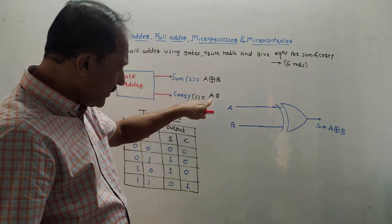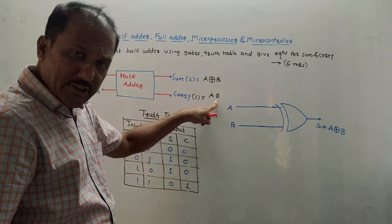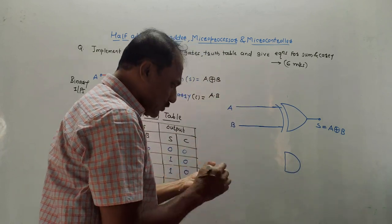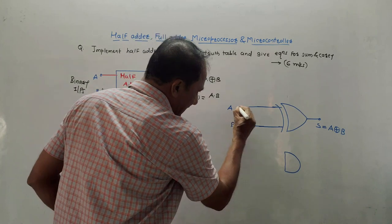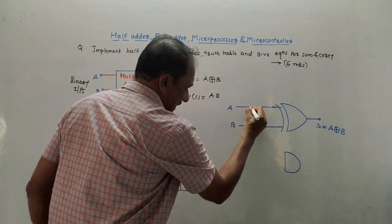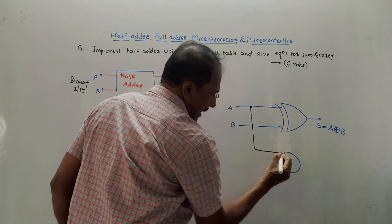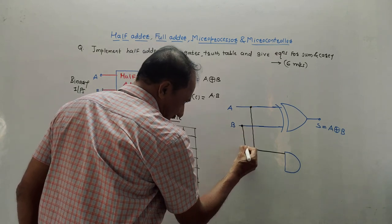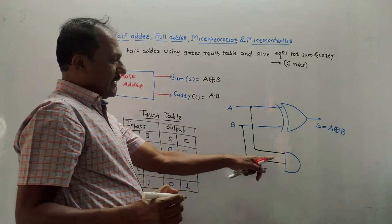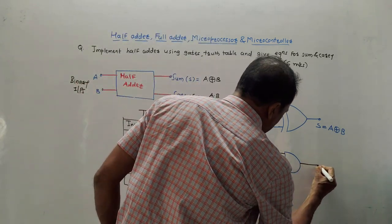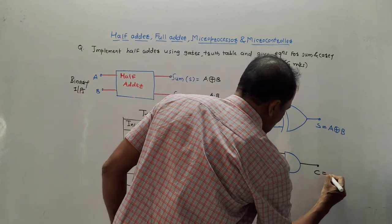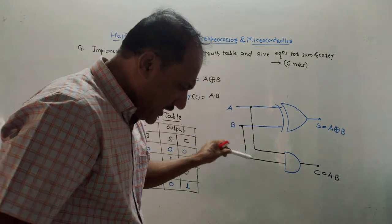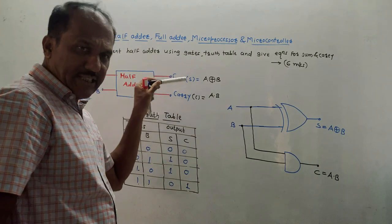To generate carry, the equation is A dot B, which corresponds to a logical AND gate. I draw one AND gate and apply the same inputs A and B to it. The output of this AND gate is C, equals A AND B. This is the complete implementation of the half adder using logic gates.